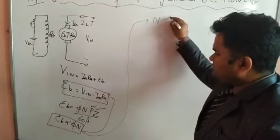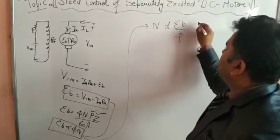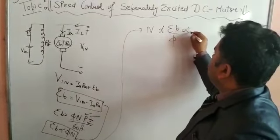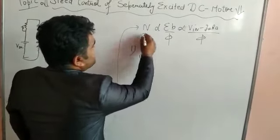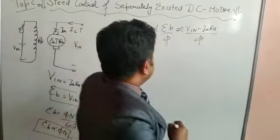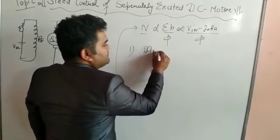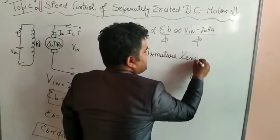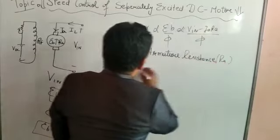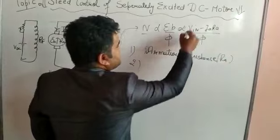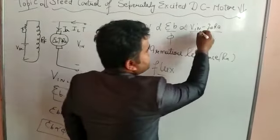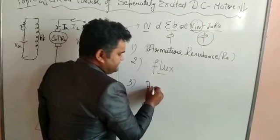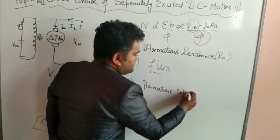From these two equations, the speed is depending upon three parameters. Speed N = E_B / φ = (V_in minus I_A·R_A) / φ. So speed depends on: first, armature resistance R_A; second, flux φ; and third, armature input voltage V_in.